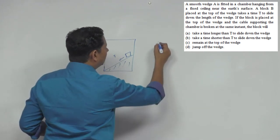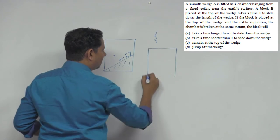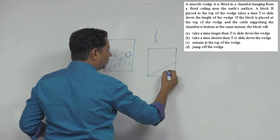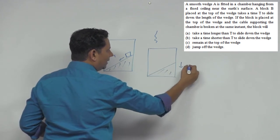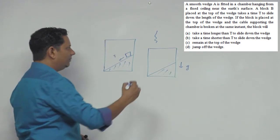Now, agar aapka case ye hai - maan lijiye jis rasti se ye bandha hua tha, woh rasti toot gayi. Aur ab ye pura block, ye puri aapki lift - up niche aa rahi hai. Niche iska ab acceleration free fall hai, acceleration aapka g ho jayega, niche ki side mein.